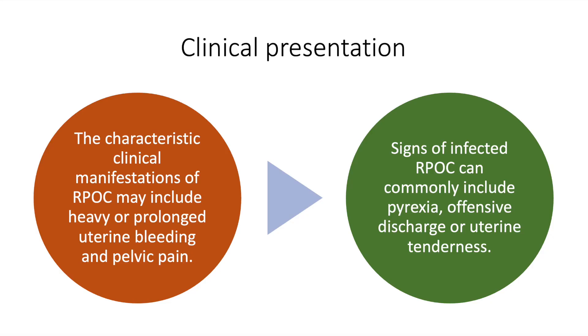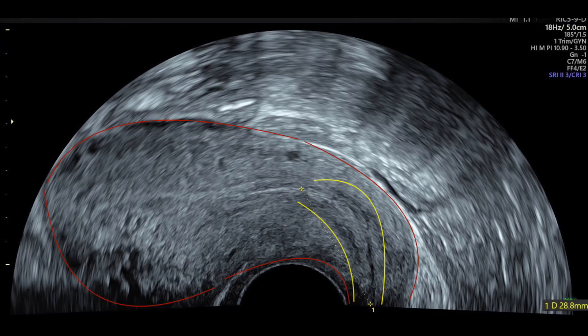It commonly presents with heavy and prolonged bleeding, and in cases of infection it can present with fever, offensive discharge, and womb tenderness.